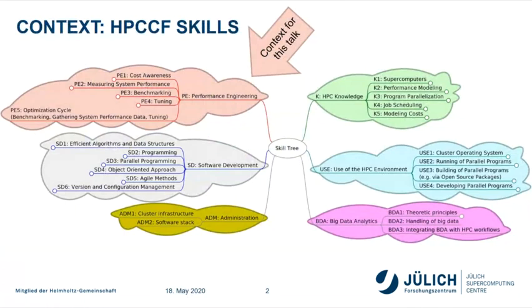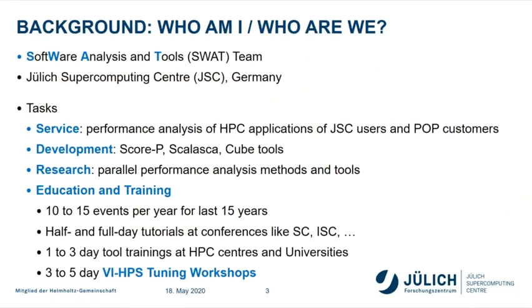Just to set the context: my background is mostly in performance analysis of HPC systems. This is that skill tree that Julian showed, and all that I know about is basically the performance engineering cloud. I'm working at the Jülich Supercomputing Center, which is a big data center in Germany — not attached to a university but to a national lab, similar to Oak Ridge or Argonne National Lab in the US. We provide computing for people in the lab, all over Germany, and all over Europe.